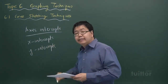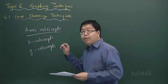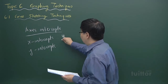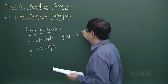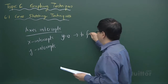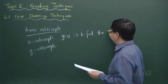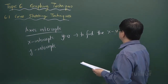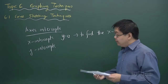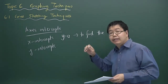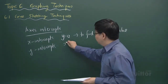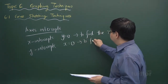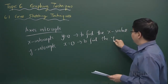X-intercepts refer to the point where the curve cuts the x-axis, so we'll be looking for where y equals zero to find the x-value. The y-intercepts is the point where the curve cuts the y-axis, so we will be letting x equal to zero to find the y-value.